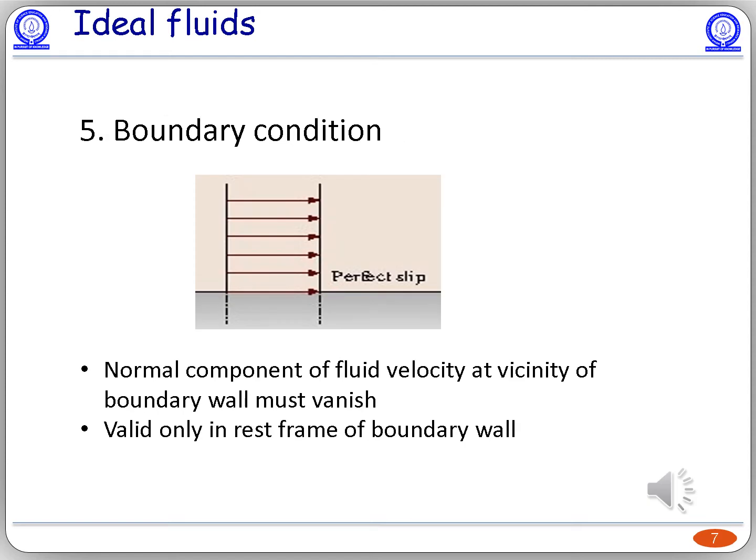The boundary condition for ideal fluids is that the normal component of fluid velocity at the vicinity of a boundary wall must vanish in the rest frame of that boundary wall. If the boundary wall is moving in some frame, the normal component of the fluid velocity must be equal to the velocity of the boundary wall.